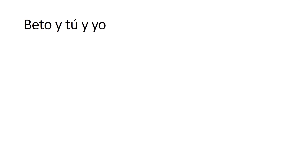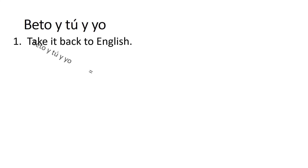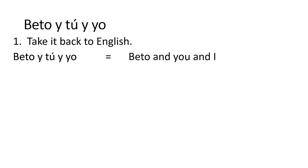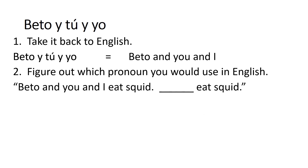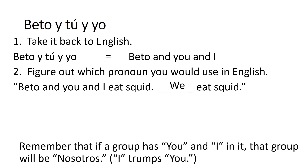Let's do another one — let's get crazy. Beto y tú y yo. Let's take it back to English: that would be Beto and you and I. Now that I got it in English, let's figure out what pronoun we would use for Beto and you and I. Beto and you and I eat squid — blank — eat squid. How about we eat squid? That's right. And just remember, if you got a group with 'you' and 'I' in it, then that group will be nosotros every time.